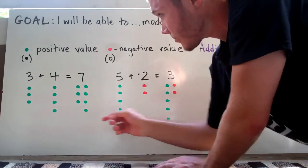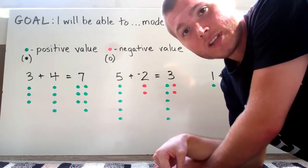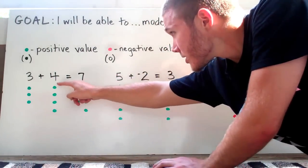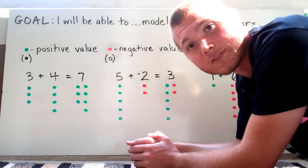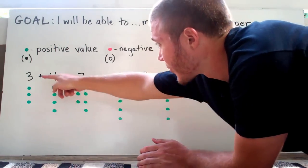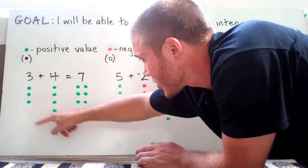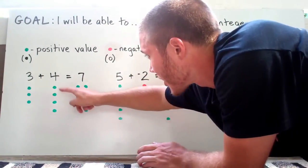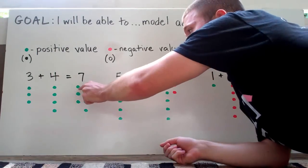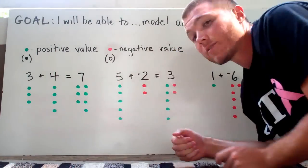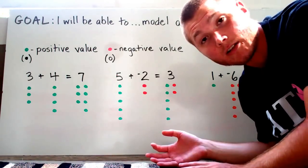First, an easy one. Positive three — three positive green dots — plus positive four, so four positive green dots. When we add those up, we combine them and we're going to get positive seven. So here are those three, and then the four positives — one, two, three, four, five, six, seven for our answer. But everyone knows how to add numbers like that already.